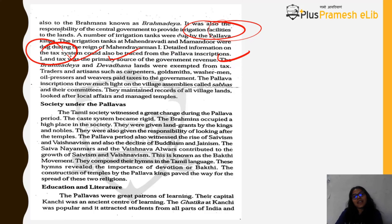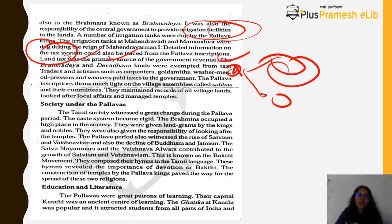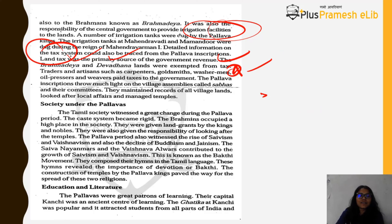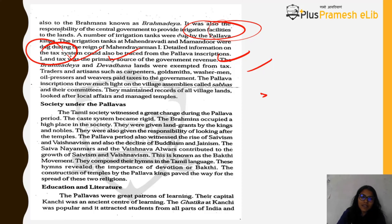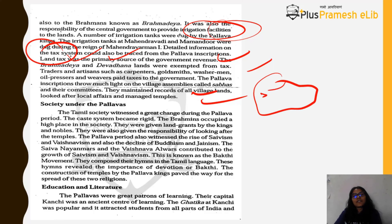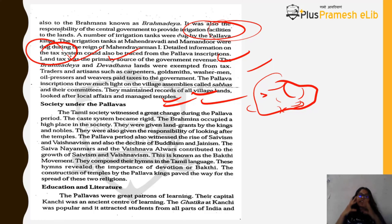Traders and artisans — carpenters, goldsmiths, washermen, weavers — also paid taxes to the government. Pallava inscriptions throw light on village assemblies called sabhas and their functions. These sabhas maintained records of all village lands, looked after local village affairs, and also participated in managing temples. While local governance was handled by sabhas, overall administration remained centralized in the king.